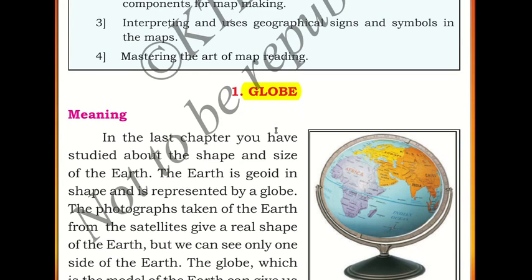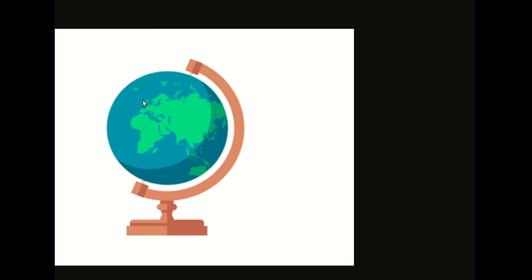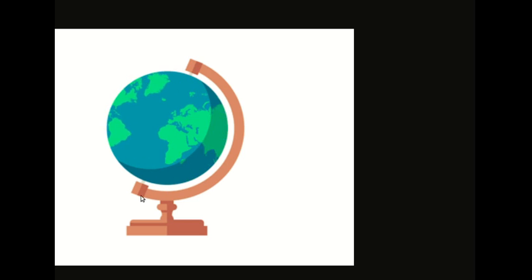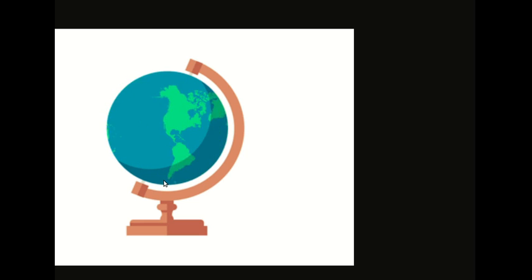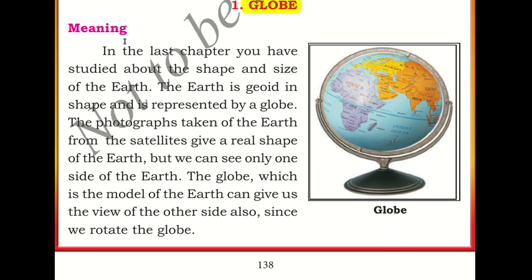Now let's start with the globe. Most of us have seen a globe before, either in our schools or elsewhere. You can see that it's supported on top and on bottom, it's tilted — not straight — and on the surface of the globe we have the different places of earth drawn according to their position. The earth is geoid in shape and is represented by a globe, so the globe is a representative of earth.